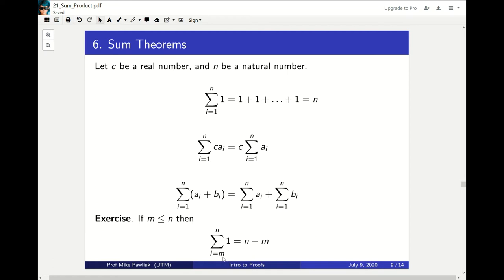Now there are a lot of variables in this, but you should think of m as like 10 and n like a hundred. So what if you add up one going from 10 to 100? What should you get?